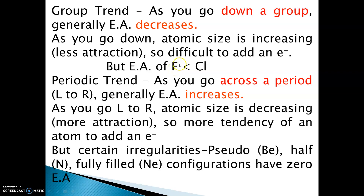The first element of the group has less electron affinity than the second element of that group. For example, for the halogen family, fluorine has less electron affinity than chlorine, because the size of the fluorine atom is small and it has a compact 2p orbital which has electron-electron repulsions.